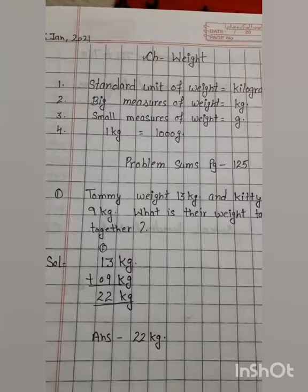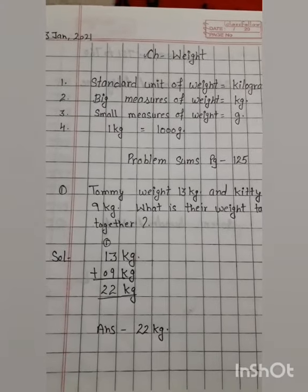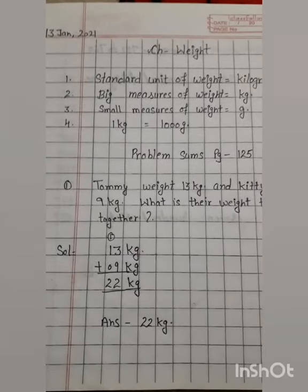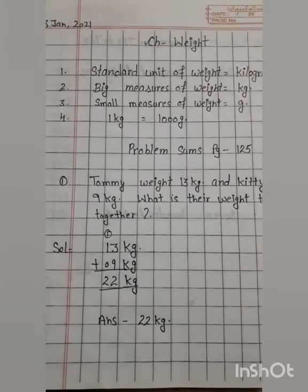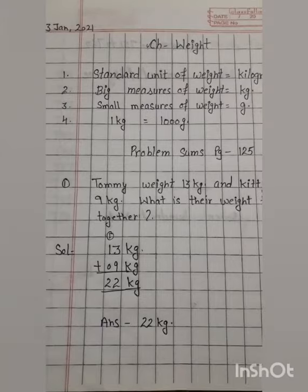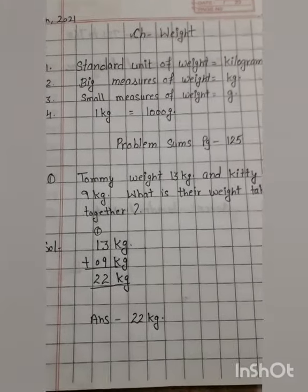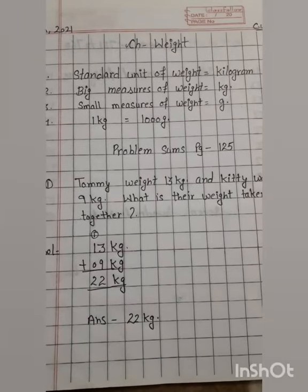Second: big measures of weight. Big measures means heavy items. We measure their weight in kg. Third point: similarly, small means light items whose weight is not much. We measure their weight in grams.